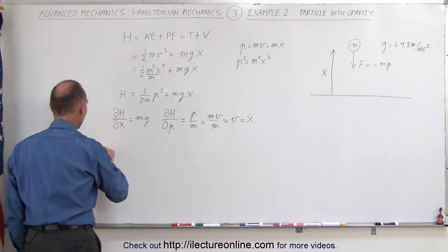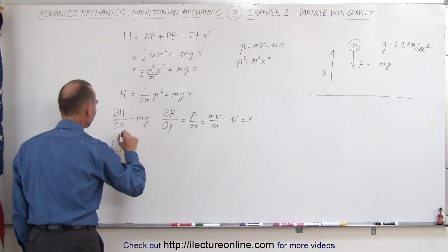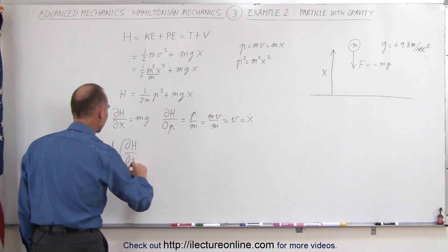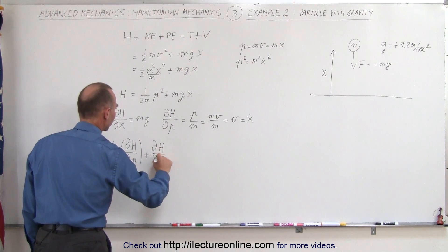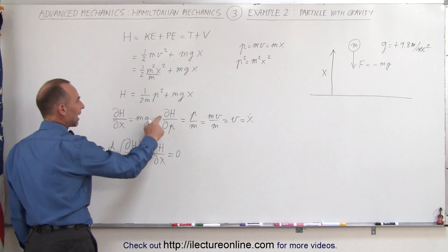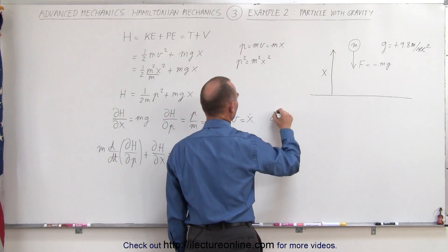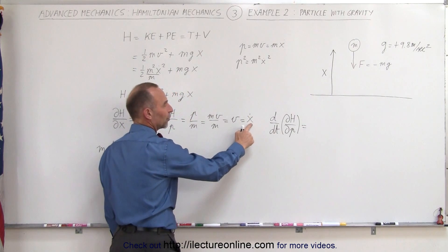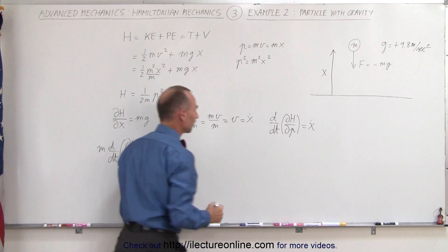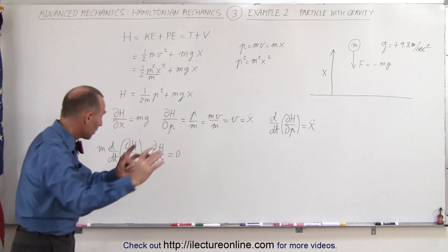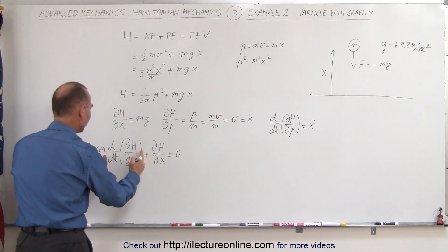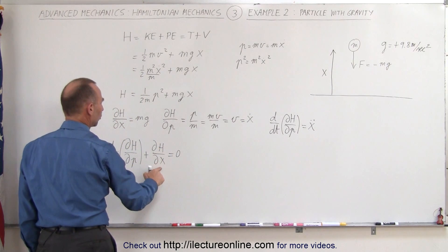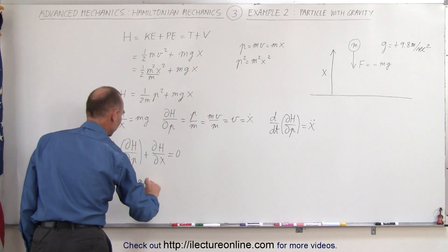Now, we also realize that the mass times the time derivative of the partial of the Hamiltonian with respect to momentum, plus the partial of the Hamiltonian with respect to position, should equal zero. So if we take the time derivative of the partial of the Hamiltonian with respect to p, that will be equal to the derivative of x dot with respect to time, which gives us x double dot. So now when we plug that all in here, we can say that the mass times x double dot, which is acceleration, plus the partial of the Hamiltonian with respect to x, which is mg, is equal to zero.